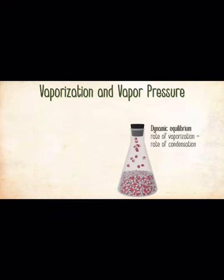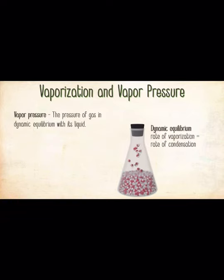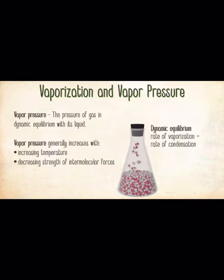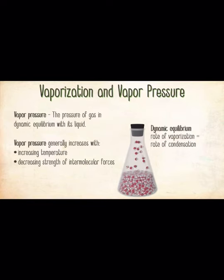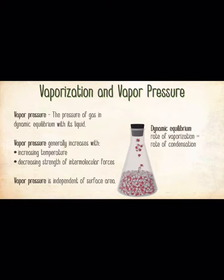The pressure of a gas in dynamic equilibrium with its liquid is its vapor pressure. For example, the vapor pressure of water at 25°C is 23.3 torr — meaning the pressure of gaseous water in a sealed container in equilibrium with liquid water is 23.3 torr. Vapor pressure generally increases with increasing temperature and with decreasing strength of intermolecular forces. However, vapor pressure is independent of surface area because even though vaporization rate increases with surface area, condensation rate does so as well under dynamic equilibrium, so the two effects cancel out.